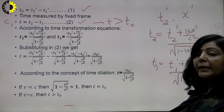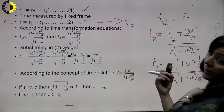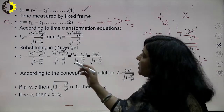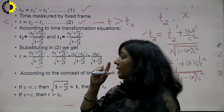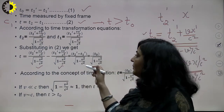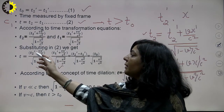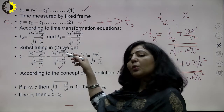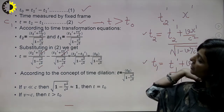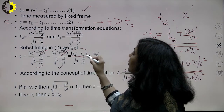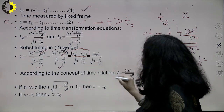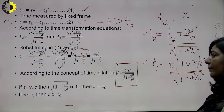Substituting the values of T2 and T1 and computing T = T2 minus T1: T = (T2-dash + Vx-dash/c² - T1-dash - Vx-dash/c²) / √(1 - V²/c²). The Vx-dash/c² terms cancel, giving T = (T2-dash - T1-dash) / √(1 - V²/c²), which is T-naught / √(1 - V²/c²). So the final expression is T = T-naught / √(1 - V²/c²).